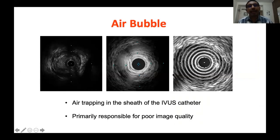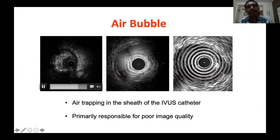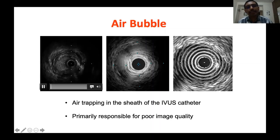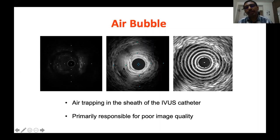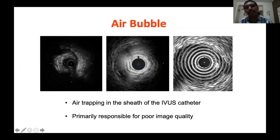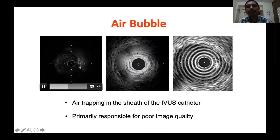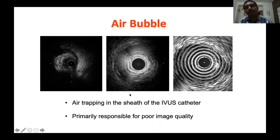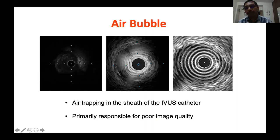Air bubble is the biggest enemy of IVUS imaging. Air trapping in the sheath and IVUS catheter occurs mainly with mechanical catheters — it doesn't occur with solid state systems because there is no sleeve around the catheter. Air bubbles cause diffuse bright appearance — you cannot identify anything — and can also cause prominent reverberations. You must carefully flush the catheter to remove all air bubbles to avoid these types of artifacts.